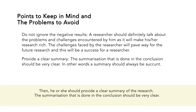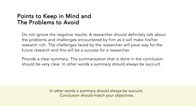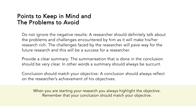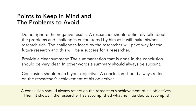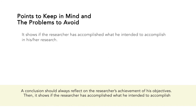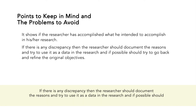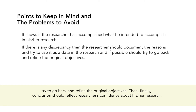He or she should provide a clear summary of the research. The summarization done in the conclusion should be very clear. Conclusion should match your objectives — when you are starting your research, you always highlight the objective, and your conclusion should match that objective. A conclusion should always reflect on the researcher's achievement of his or her objectives and should show if the researcher has accomplished what he or she intended to accomplish. If there is any discrepancy, the researcher should document the reasons and try to use it as data in the research, and if possible should try to go back and refine the original objectives.